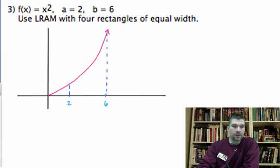And we're going to divide those guys into 4 equal rectangles. And we want to use LRAM, which means we're going to go to the left side of each rectangle and figure out what our height should be.